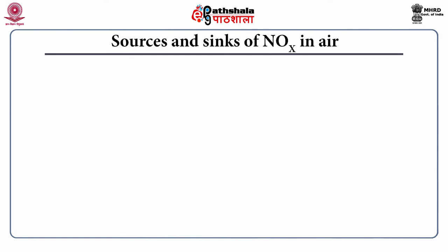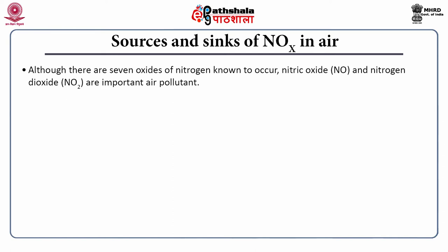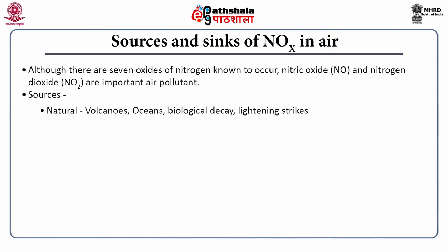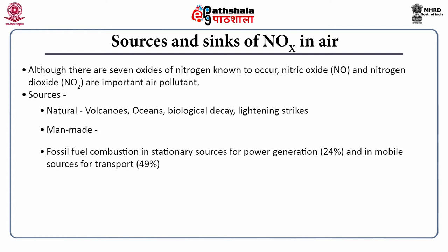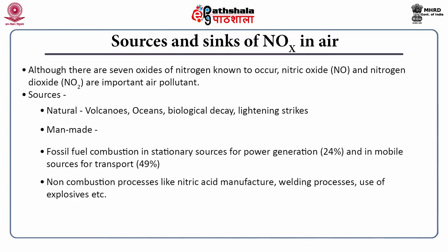Sources and sinks of NOx in air: although there are seven oxides of nitrogen known to occur, only two are most important in air pollution — nitric oxide and nitrogen dioxide. Natural sources are volcanoes, oceans, biological decay and lightning strikes. Man-made sources include fossil fuel combustion in stationary sources for power generation, accounting for 24%, and mobile sources for transport accounting for 49%. Non-combustion processes like nitric acid manufacture, welding and use of explosives are also sources.